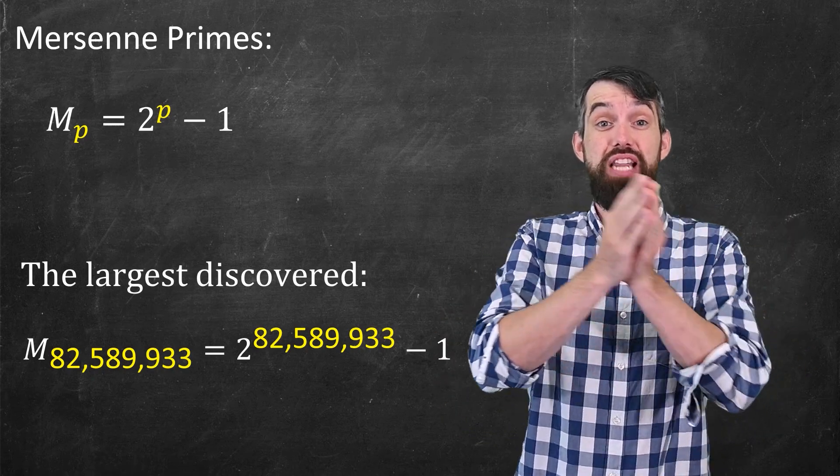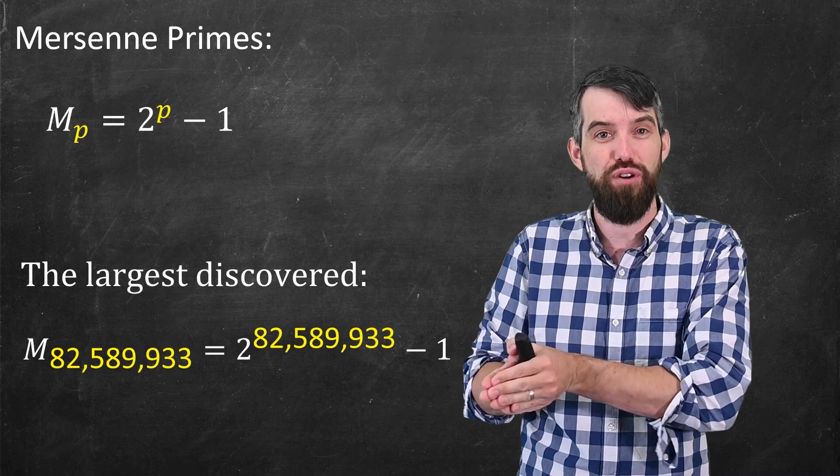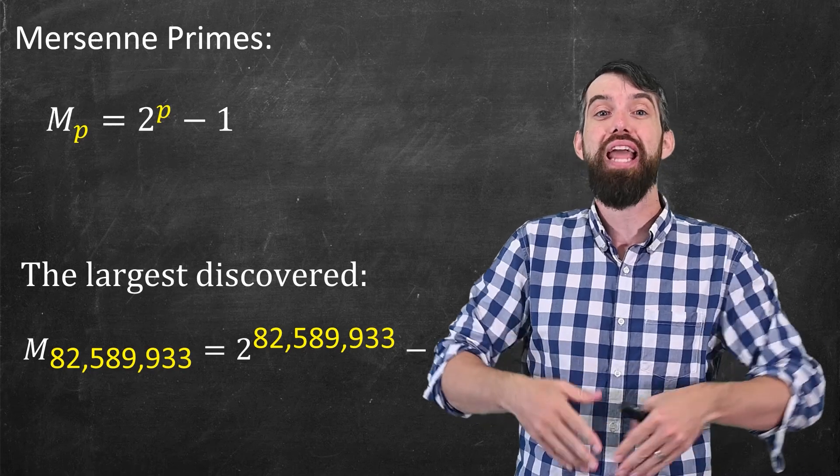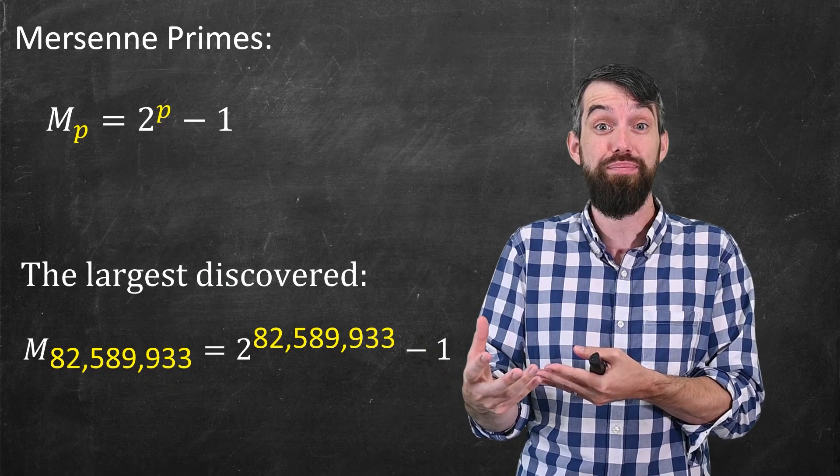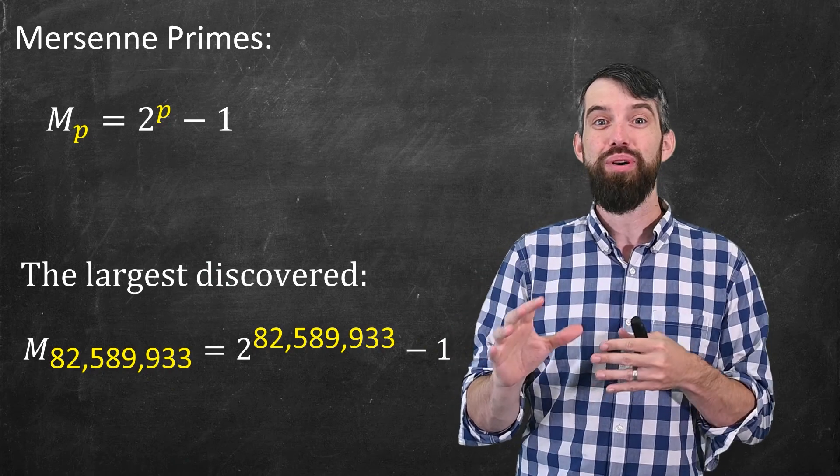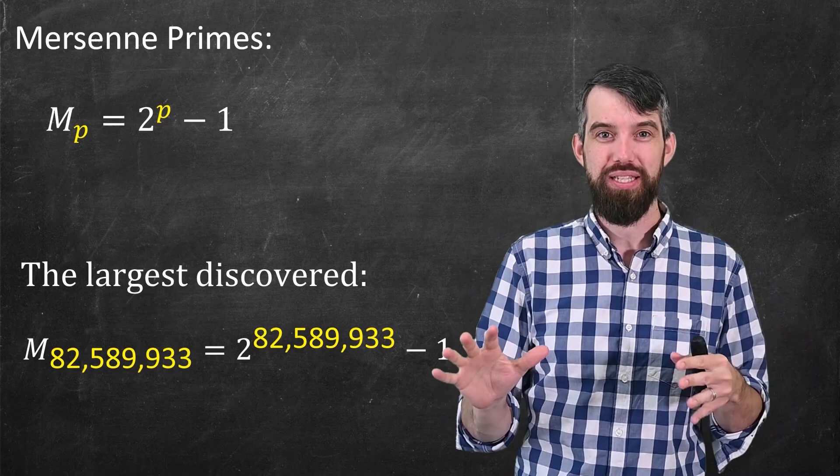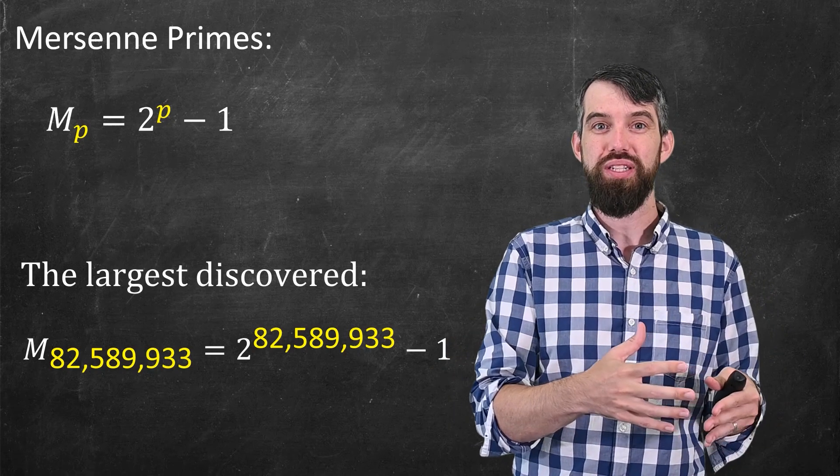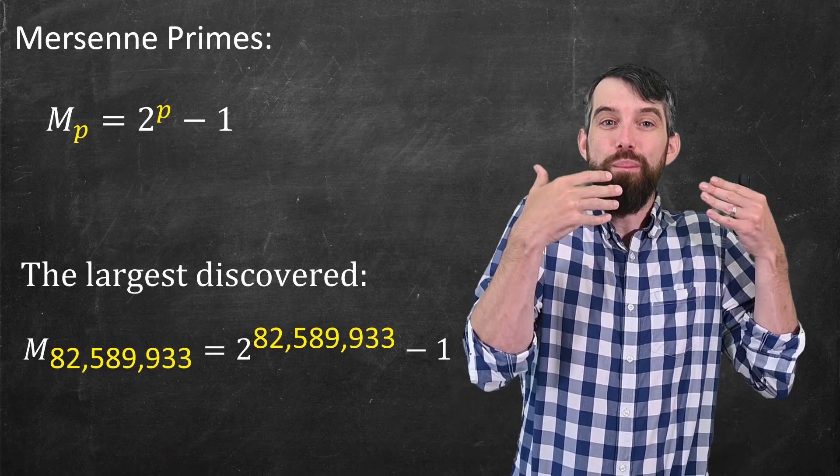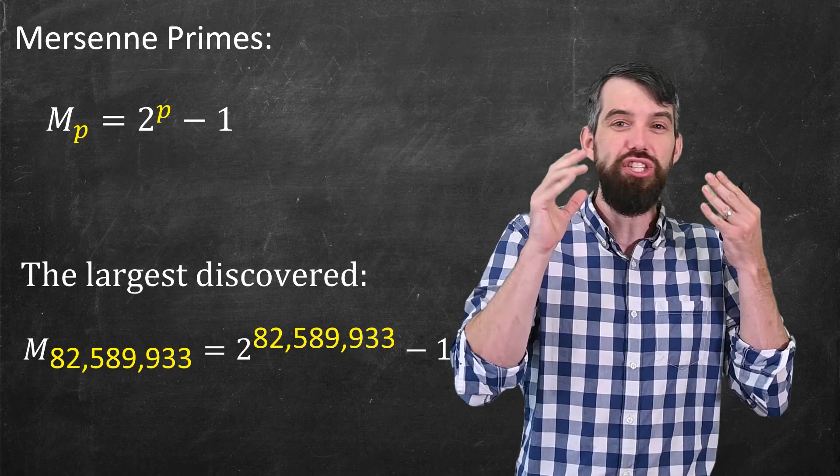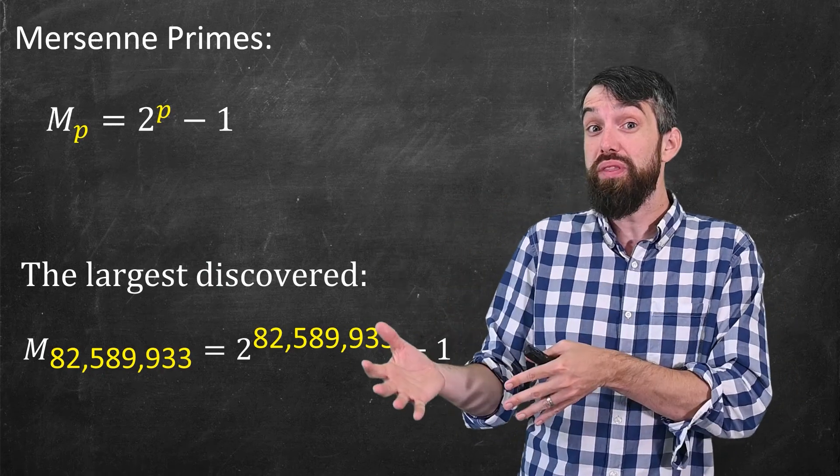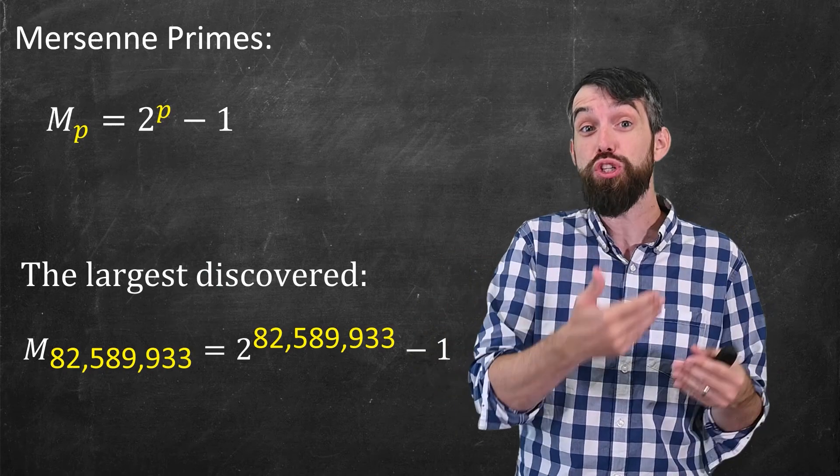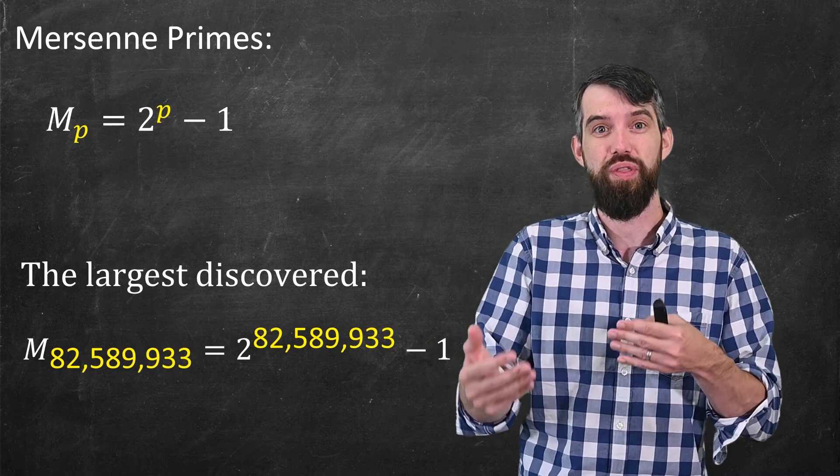And from 2018 to the time of this video, which is September 1st of 2020, there has not been a larger Mersenne prime discovered, or in fact, a larger prime of any nature. Now, this number is absolutely enormous. To just write it out would take over 24 million decimal places. It's just unfathomably large. But nevertheless, we've proven that there must be larger prime numbers, even though we haven't discovered them yet.